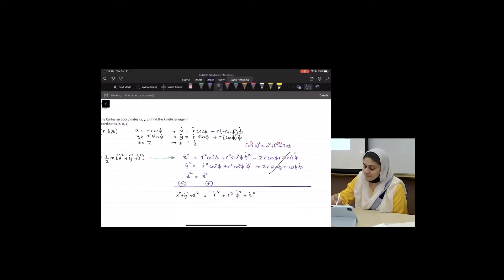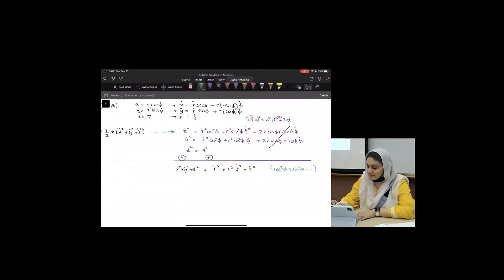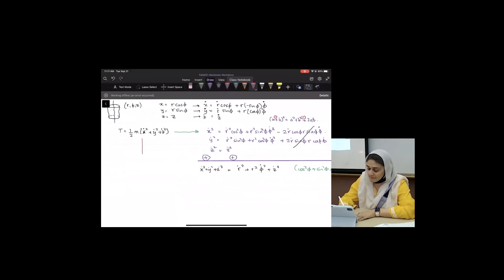because cosine squared phi plus sine squared phi equals 1. And that means my T in cylindrical coordinates will be written as 1/2 M times R dot squared plus R squared phi dot squared plus Z dot squared. So that's what we meant when we said, find your T in the appropriate generalized coordinates.